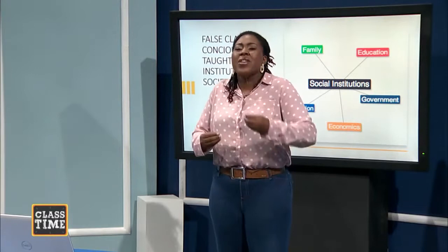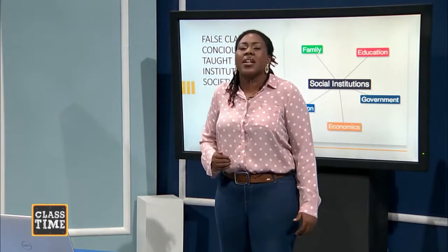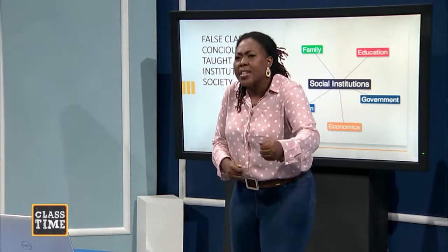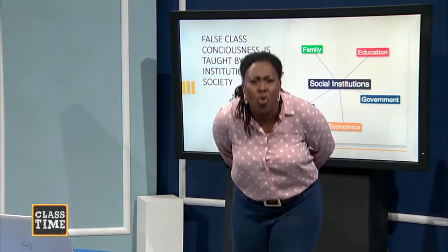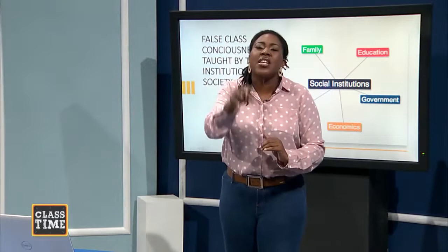Marx says that is what religion does to people. When you start suffering, it explains it away. You say God knows what he's doing. When you suffer more, you say God won't give you more than you can bear. When it gets even worse, you say the devil is testing you. When it gets worse still, you say you want to be like Job. That is how religion helps to teach the false class consciousness, and in so doing, keeps the poor poor. Marx says the worst thing for poor people is religion.